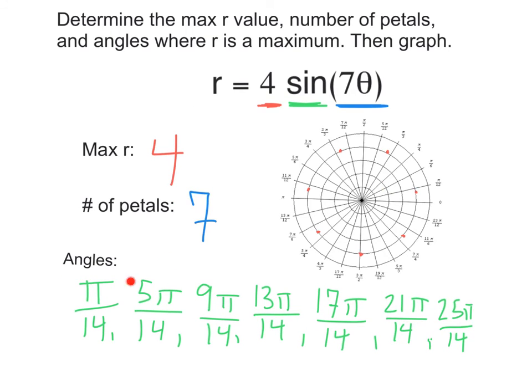Now, I've gone ahead and just estimated where each of these goes on our polar graph, and that's going to be good enough for us. We've got pi over 14, 5 pi over 14, 9 pi over 14, 13 pi over 14, 17 pi, 21 pi, and 25 pi, all over 14.